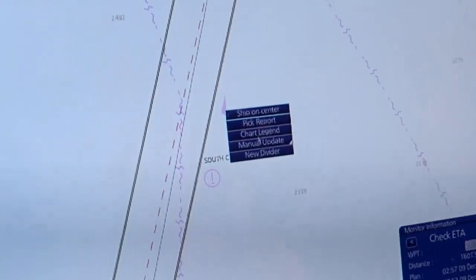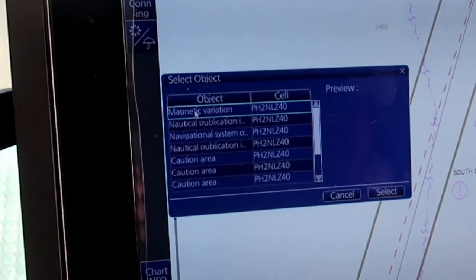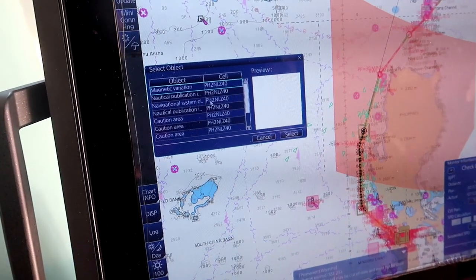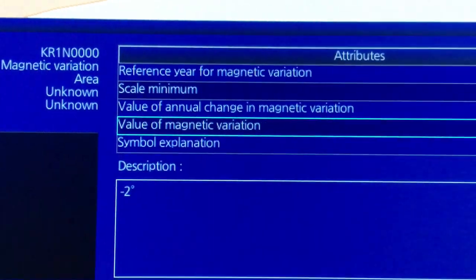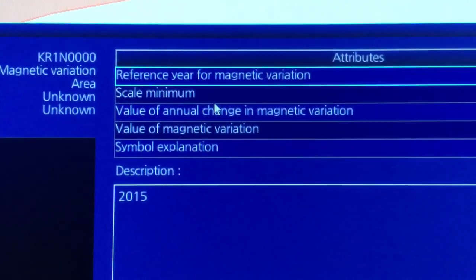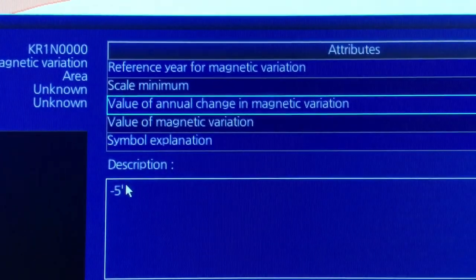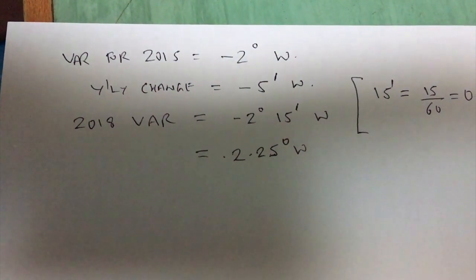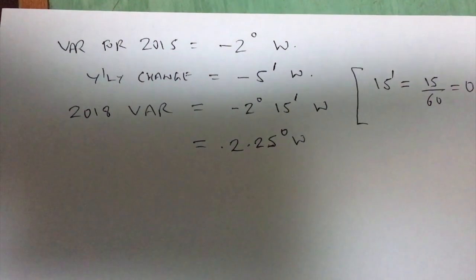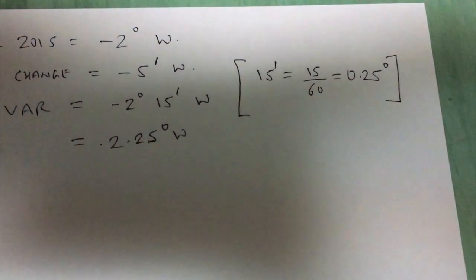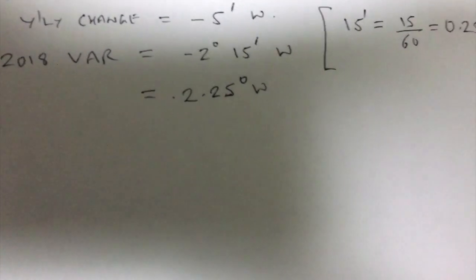This is the symbol to check the variation on the chart. Magnetic variation at this point is minus two degrees, that is two degrees west. Reference year is 2015 and value of annual change is minus five minutes, so every year it is reducing by five minutes. For three years it will be minus 15 minutes. Variation for 2015 was minus two degrees west, and yearly change was minus five minutes. Variation for 2018 will be minus two degrees and 15 minutes west. 15 minutes equals 0.25 degrees because each degree has 60 minutes. Final variation at present point would be 2.25 degrees west.